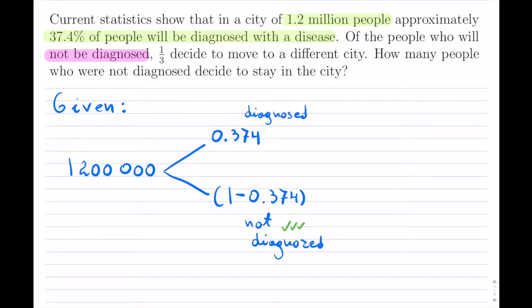One third decide to move to a different city. So from these, we know that 1 third is equal to 0.3 repeating. So that's how many move to a different city. Which means that 1 minus the 1 third actually stay.